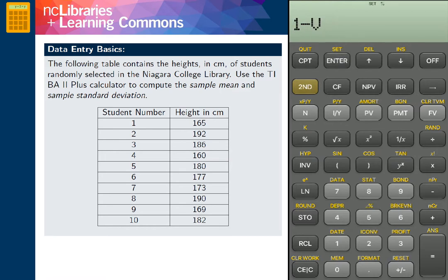Once we arrive at our choice, we scroll down using the arrow keys. Here the calculator will display n, the number of data points, and x bar, the sample mean.